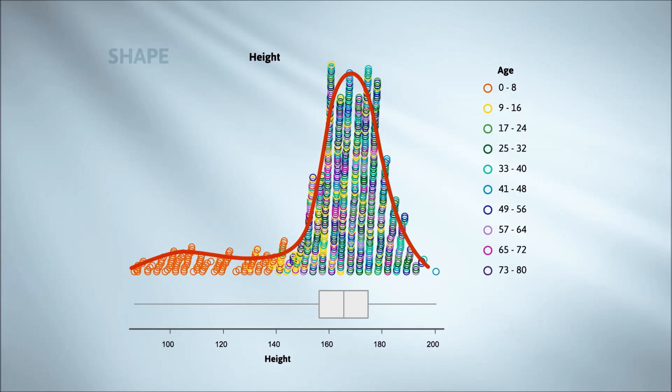Interestingly, we don't get a second mountain to anywhere near the same extent with heights. The left tail is much flatter here. I wonder why that is. The left tail has the children in orange, and the teenagers in yellow are much more mixed in with the adults here.